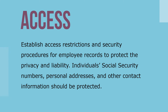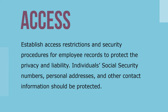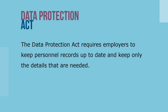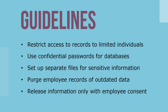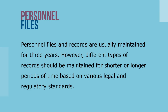Individual social security numbers, personal addresses, and other contact information should be protected. The Data Protection Act requires employers to keep personnel records up to date and keep only the details that are needed. Guidelines regarding employer access and storage of employee records include: restricting access to a limited number of individuals; using confidential passwords for HR databases; setting up separate files for sensitive employee information; purging outdated data; and releasing employee information only with employee consent. Personnel files and records are usually maintained for three years, though different types of records should be maintained for shorter or longer periods based on various legal and regulatory standards.